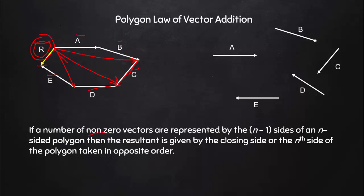This is the polygon law of vector addition. If a number of non-zero vectors are represented by N minus 1 sides of an N-sided polygon, then the resultant is given by the closing (Nth) side. In the example, a hexagon is being formed — five sides are the five vectors, and the closing sixth side, placed in the anti-clockwise (opposite) direction, gives the resultant of all five vectors. So R-bar equals A-bar plus B-bar plus C-bar plus D-bar plus E-bar.